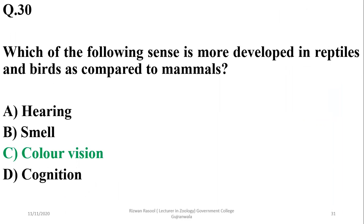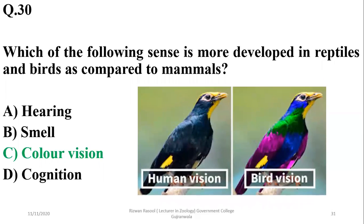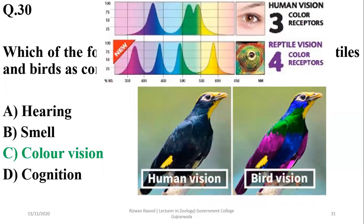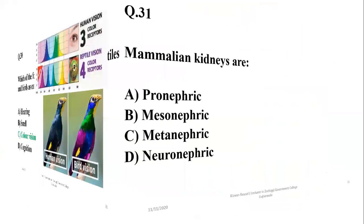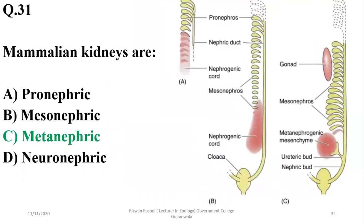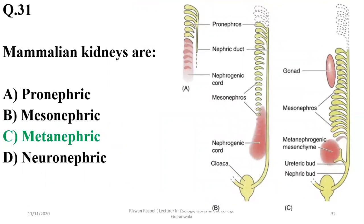Hearing, smell, and cognition are comparatively better developed in mammals. Birds have much better and clearer color vision compared to humans. Reptiles have poor color receptors, while mammals have only three types of cones. Question 30: Mammalian kidneys are metanephric in type. The right option is C.